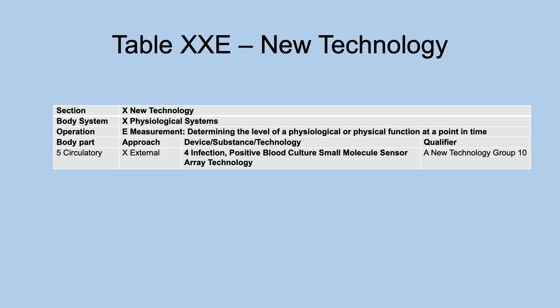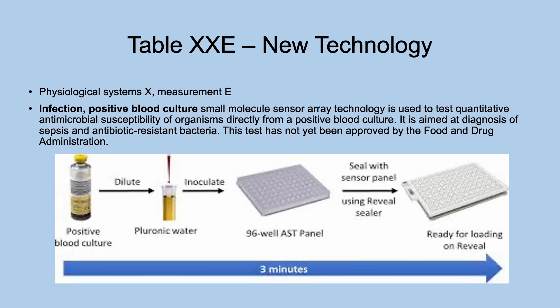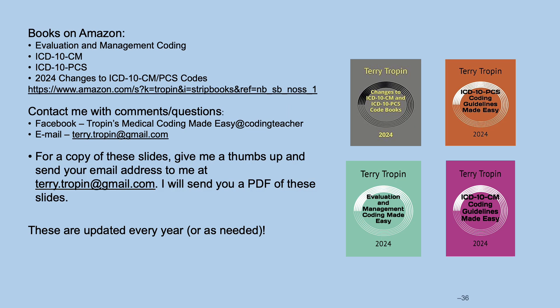Another new technology physiological systems measurement: infection, positive blood culture, small molecule sensor array technology. This is used to test quantitative antimicrobial susceptibility of organisms directly from a positive blood culture. It is aimed at diagnosis of sepsis and antibiotic-resistant bacteria. The process involves diluting and inoculating the positive blood culture — and it's quick compared to other tests. This has not yet been approved.